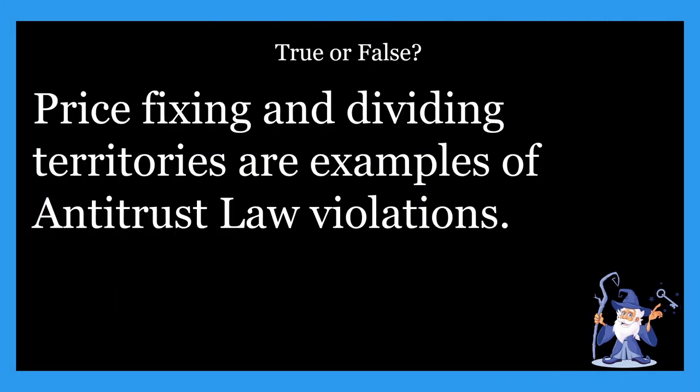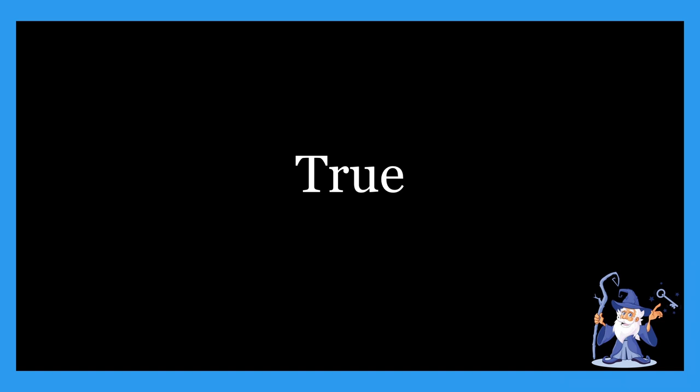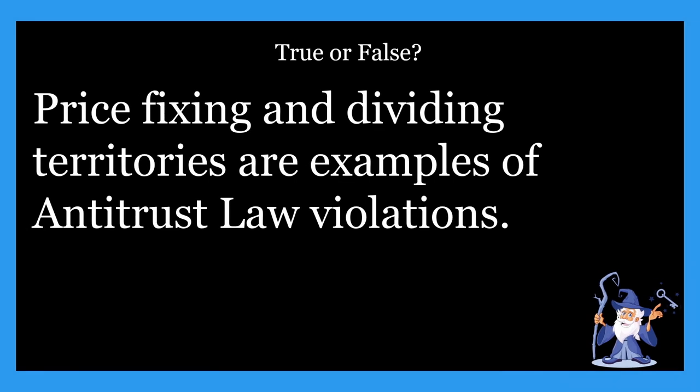Next one: price fixing and dividing territories are examples of antitrust law violations. Is that true or false? That is definitely true. Those are both fantastic examples of antitrust violations — which means you definitely don't want to do them, because you could end up in jail, fined, lose your license, all that. Price fixing, dividing territories — those are examples of antitrust law violations, so that statement is true.